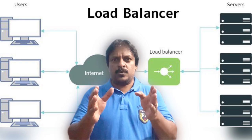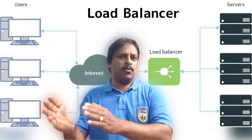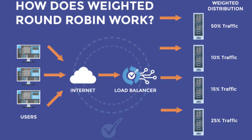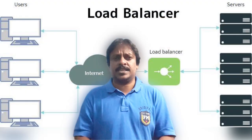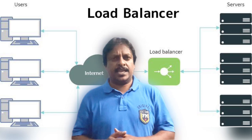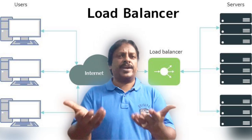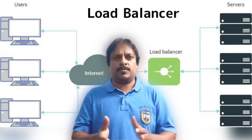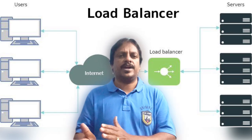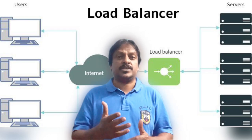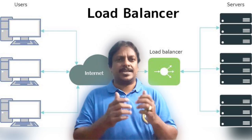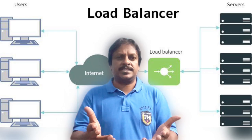Our next load balancing algorithm is weighted round robin. How it works is we configure the load balancer with particular weightages for each server. More requests will go to the more weighted server. For example, if server 1 is configured with a weight of 10, server 2 with 5, and server 3 with 2, then more requests will be sent to server 1 because it has the highest weight of 10.